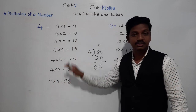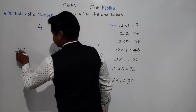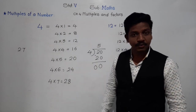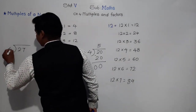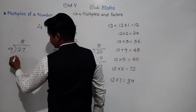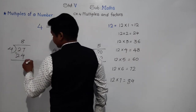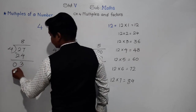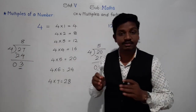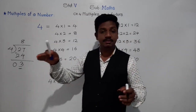So multiples are the numbers exactly divisible by the given number. If we take 27 — is 27 a multiple of 4? When we divide 27 by 4, the nearest number in the table of 4 below 27 is 24 (4×8). So 27 minus 24 gives remainder 3. Since 27 is not divisible by 4, it is not a multiple of 4.